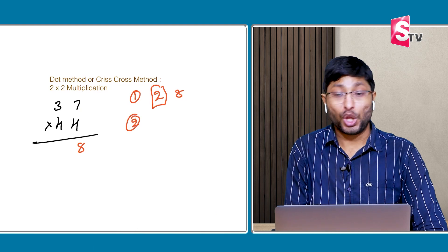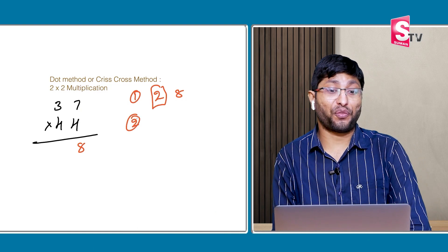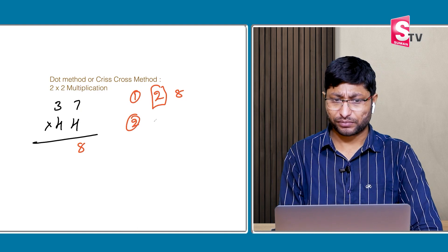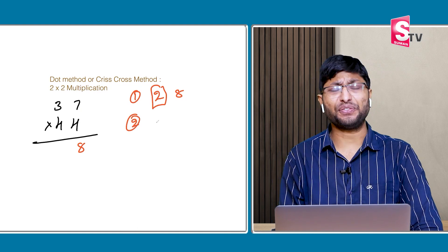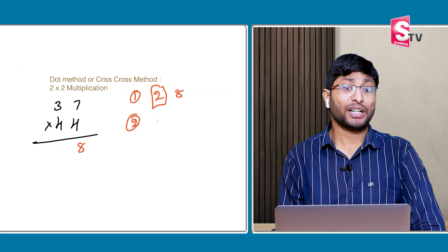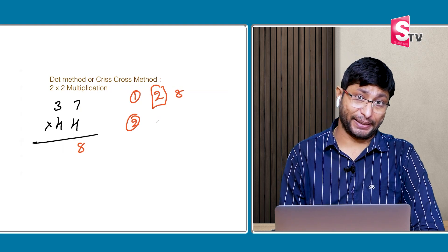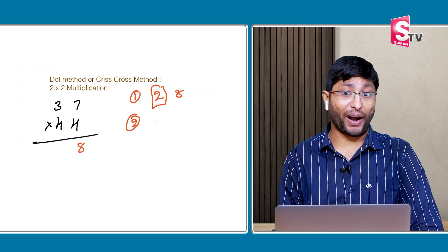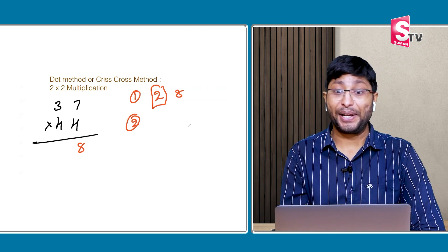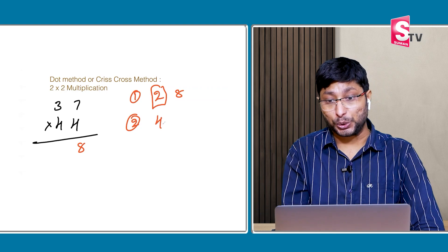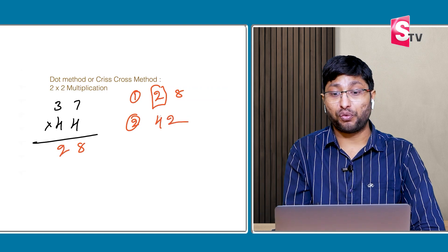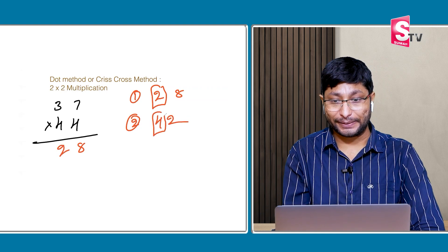Step 2: 4 × 3 = 12. 7 × 4 = 28. 28 plus 12 = 40. Plus 2 carry = 42. Write down the 2; 4 carry.